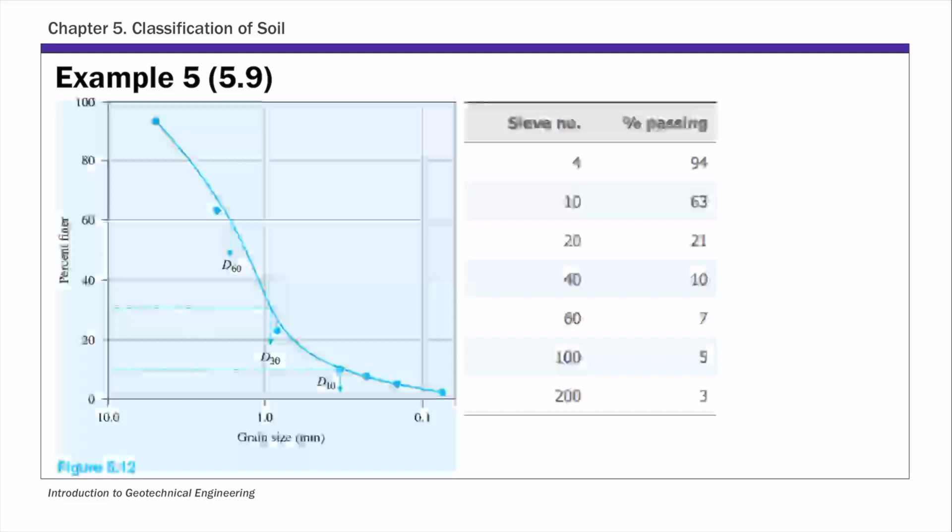On the left hand side, that's the particle size distribution curve using the sieve analysis data. We have grain size on the horizontal axis - remember this is a log scale - and then we have the percent finer or percent passing on the y-axis. Given this curve, let's first find the percent of different soil types, particle sizes. We start with percent fine.